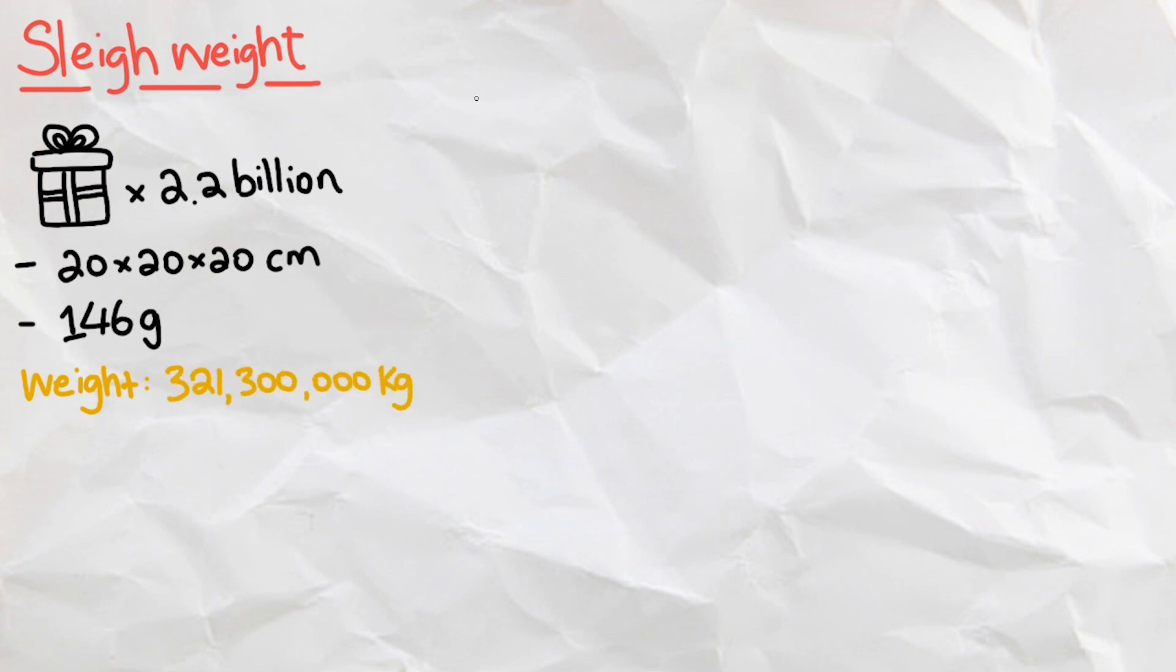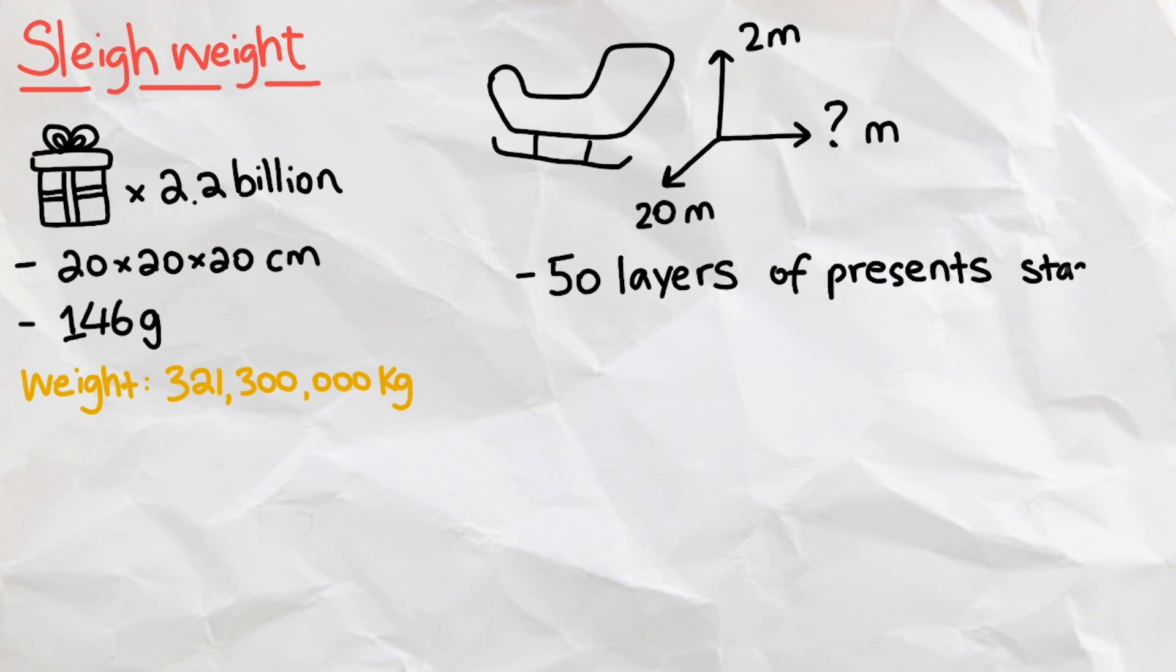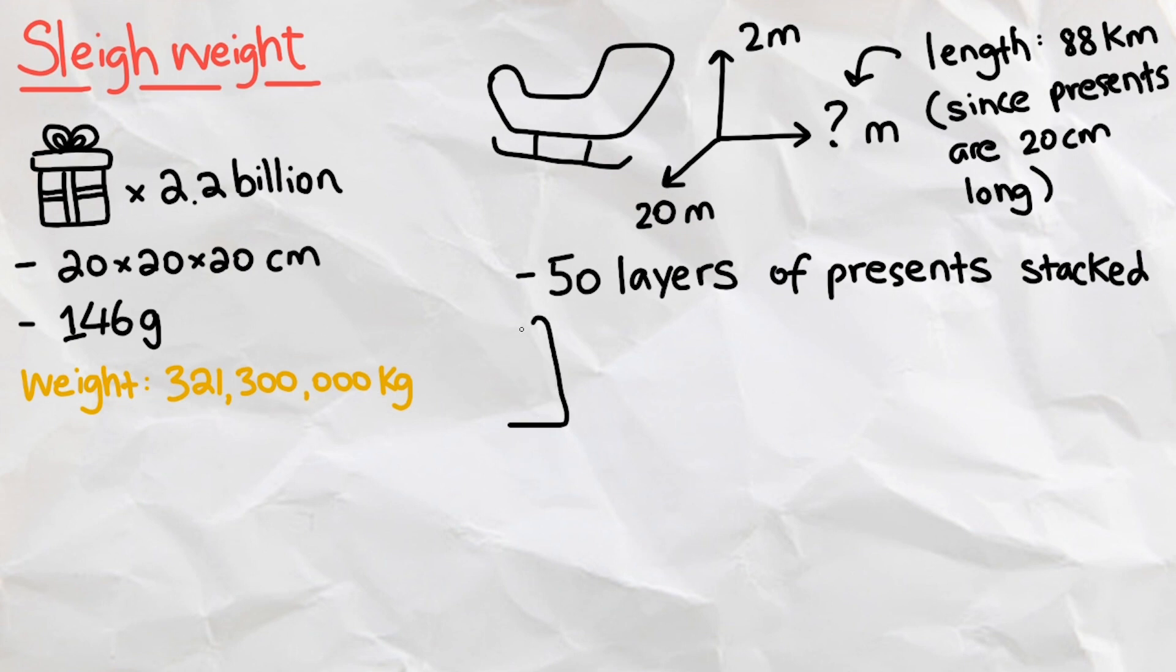Now for the sleigh dimension, we assume that the sleigh is 20 meters in width and 2 meters in height, so that we just need to find how long it must be. Assuming that Santa stacks the present into 50 layers, the sleigh will be 80 kilometers long, assuming each present is 20 centimeters in all dimensions. He will probably want to build his sleigh out of pine tree, which is native to the Arctic, where Santa lives.